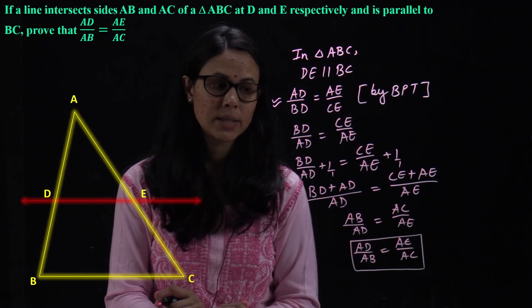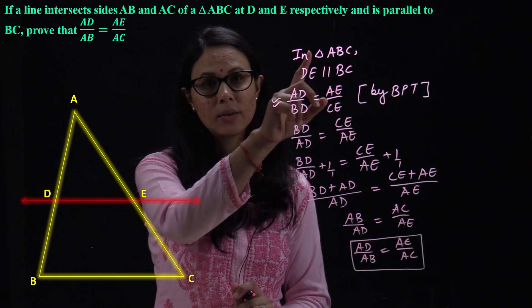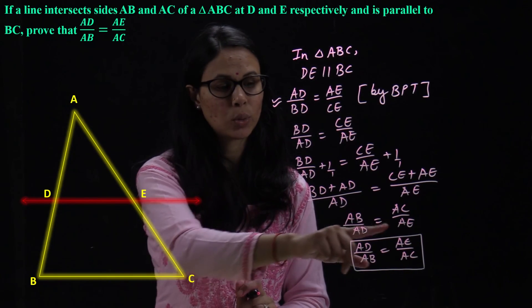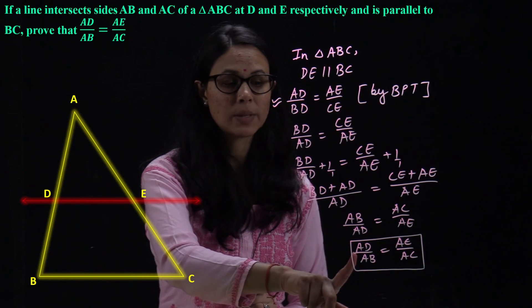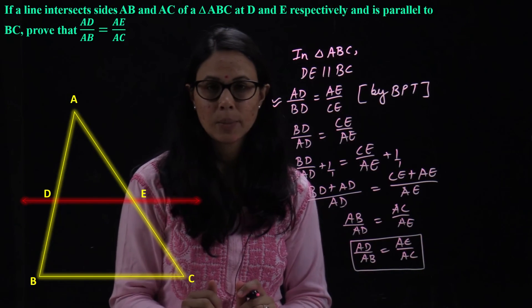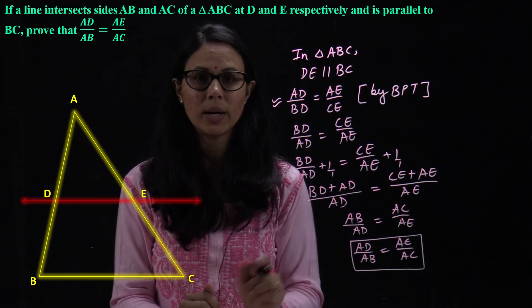So, here AB upon AD is equal to AC upon AE. Now, what we need is the reciprocal of this. We reciprocal on both sides again, then we got AD upon AB is equal to AE upon AC. This is my required answer.